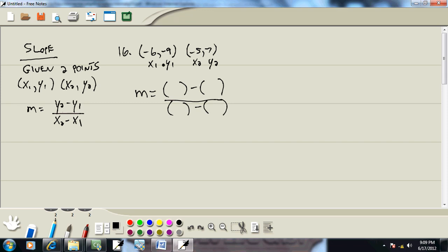Now where our y2 was, we'll put in 7. And where our y1 is, we'll put in negative 9. Where our x2 is, we'll put in negative 5. And where x1 is, we'll put in negative 6.